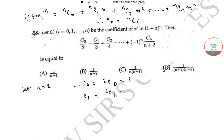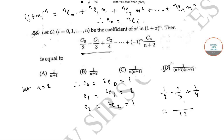For n = 2: C₁ = 2C₁ = 2 and C₂ = 2C₂ = 1. Using these values in the expression, we get 1/2 - 2/3 + 1/4. Taking LCM as 12, this gives (6 - 8 + 3)/12 = 1/12. So the value of the expression is 1/12 for n = 2.